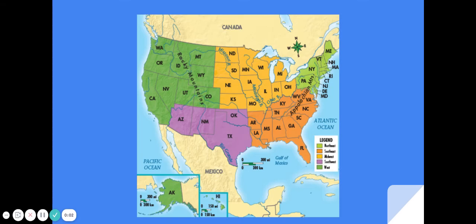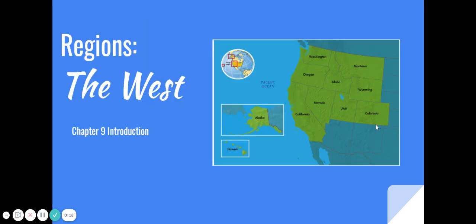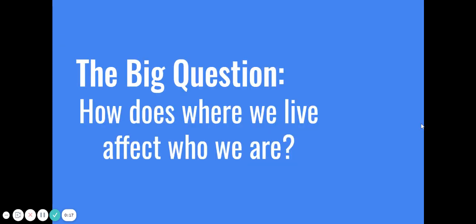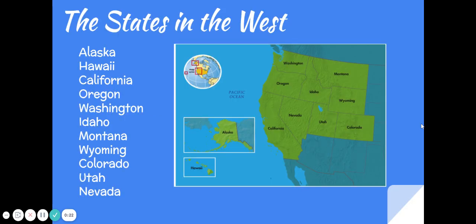Hey fourth graders, today I'm going to introduce you to your final stop in the U.S. regions tour that you've been participating in these last few months. We are headed west! The big question: how does where we live affect who we are? In this region we have 11 states: Alaska, Hawaii, California, Oregon, Washington, Idaho, Montana, Wyoming, Colorado, Utah, and Nevada.